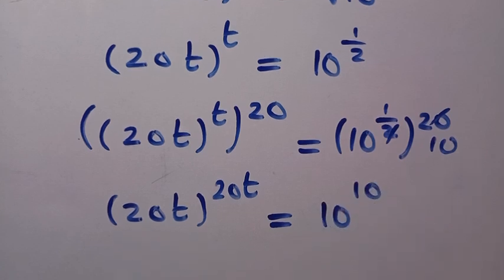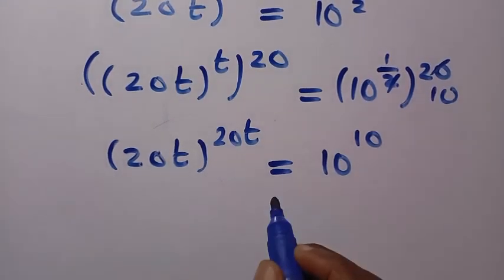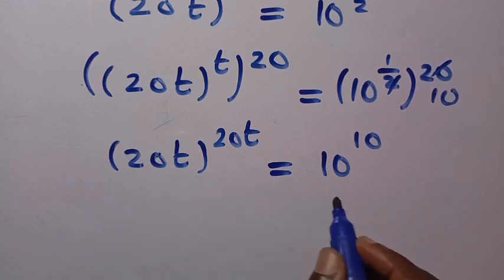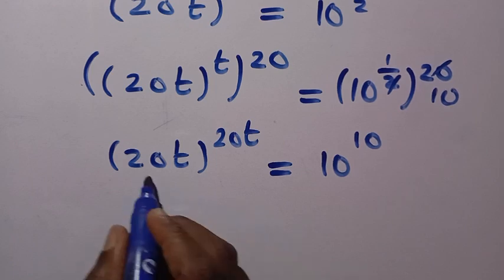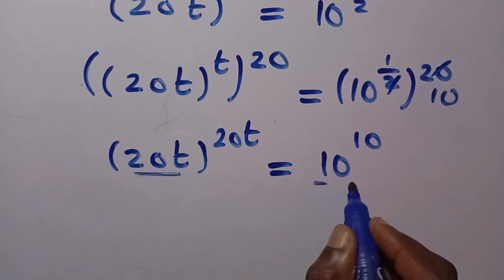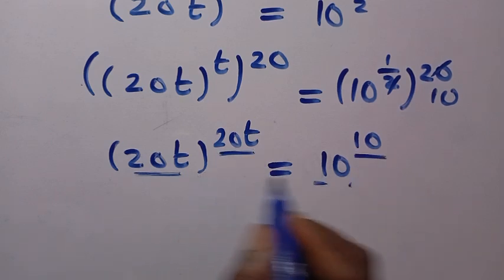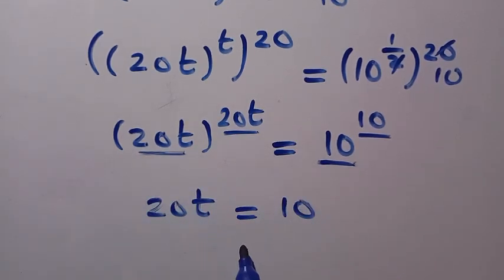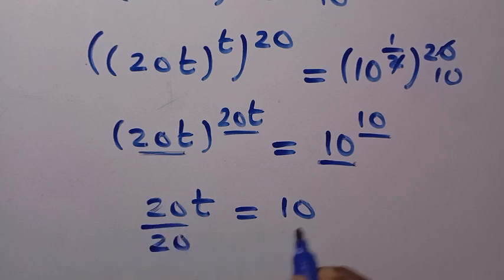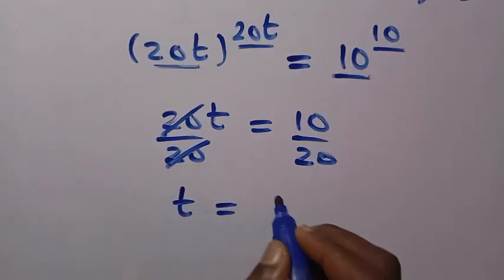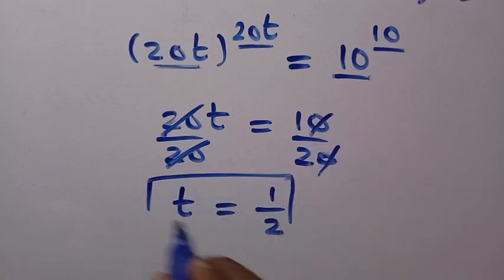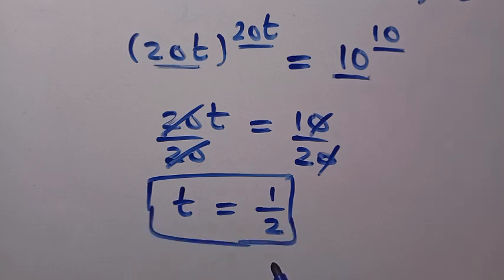At this point, applying the Lambert W function would give many complex solutions. But to obtain the real root, we compare the base and the exponent on the left side — since both equal 20t — with the right side where both the base and exponent are 10. So we set 20t equal to 10, divide both sides by 20, and get t equals 1 over 2.